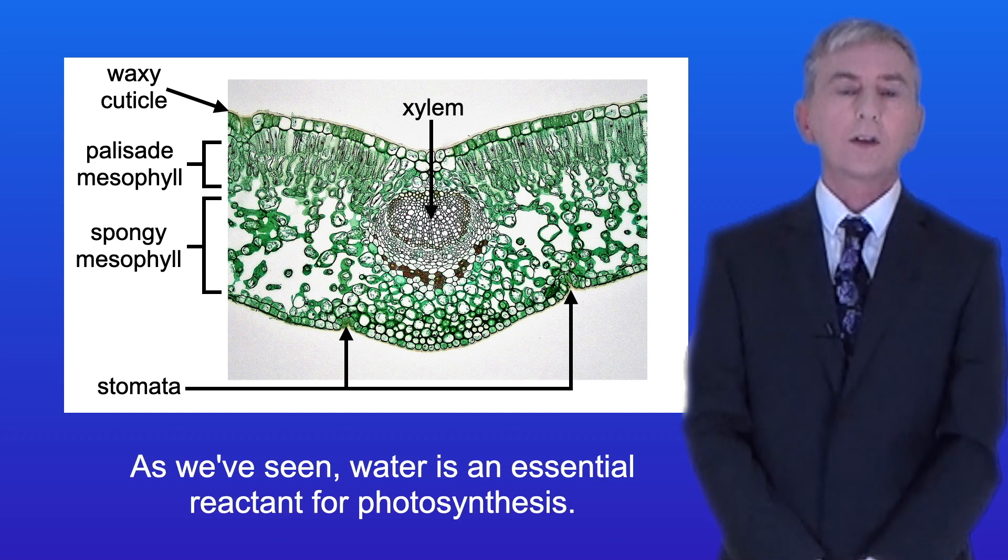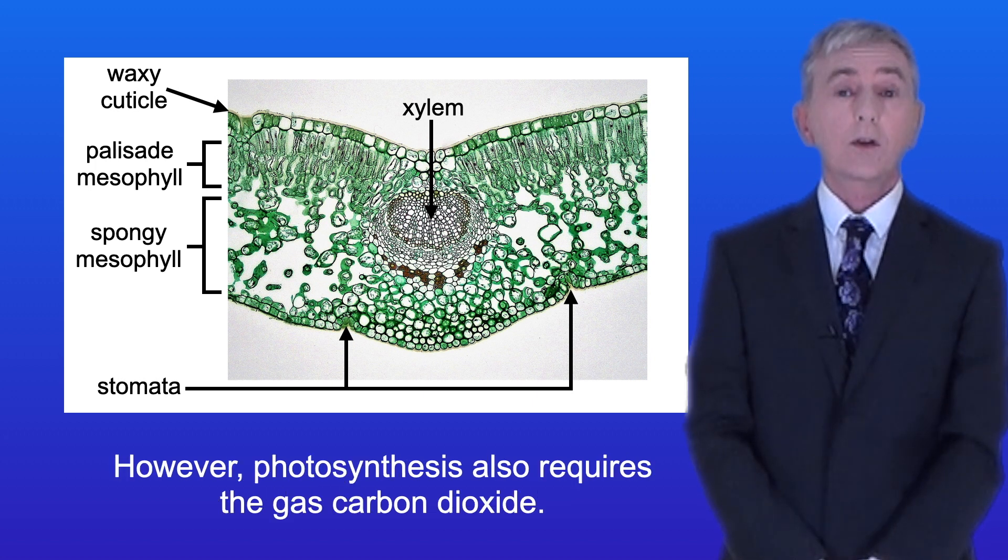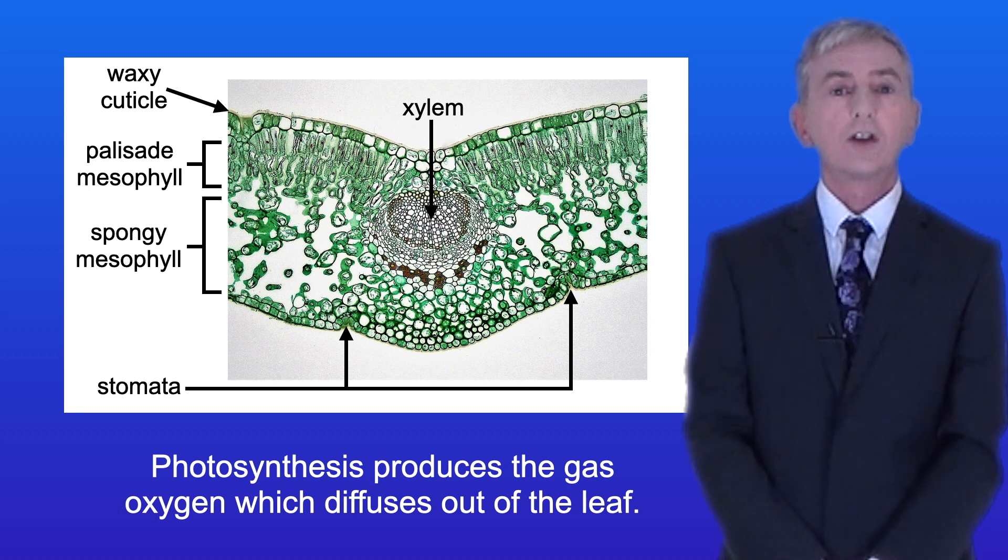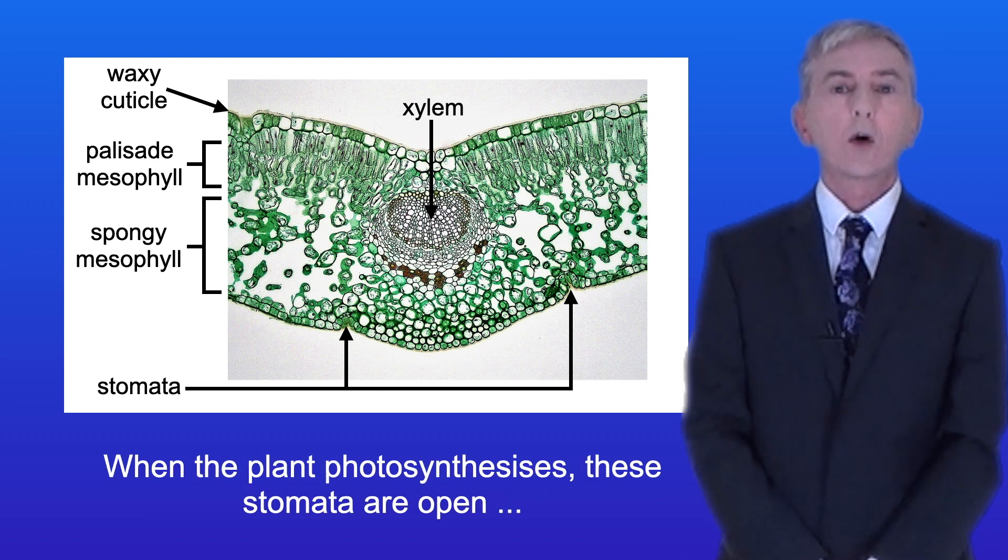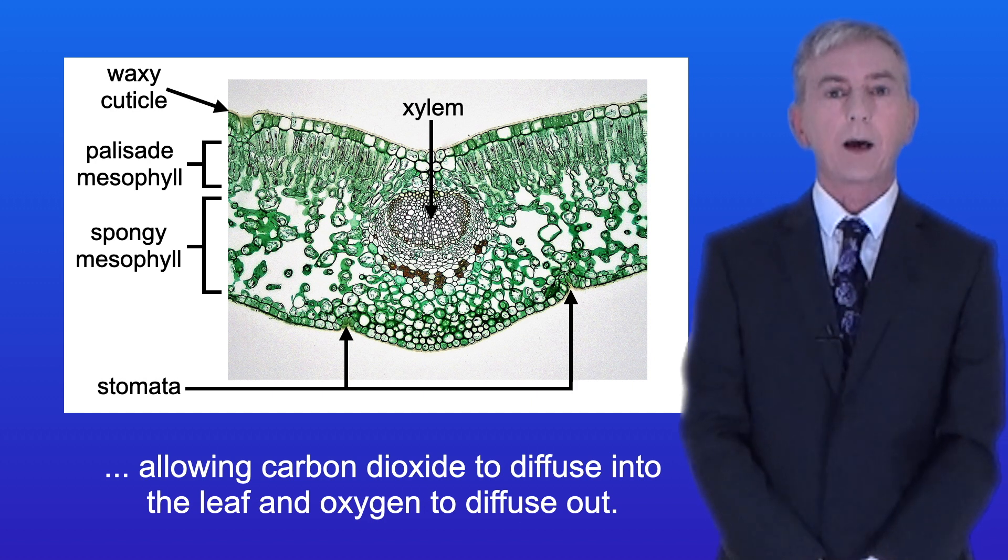So as we've seen, water is an essential reactant for photosynthesis. However, photosynthesis also requires the gas carbon dioxide which diffuses into the leaf from the external air. Photosynthesis produces the gas oxygen which diffuses out of the leaf. Now on the lower surface of the leaf we find thousands of tiny pores called stomata, and when the plant photosynthesizes these stomata are open allowing carbon dioxide to diffuse into the leaf and oxygen to diffuse out.